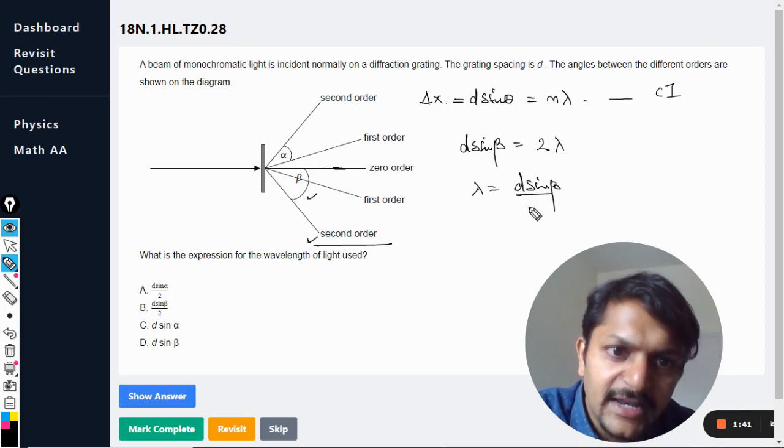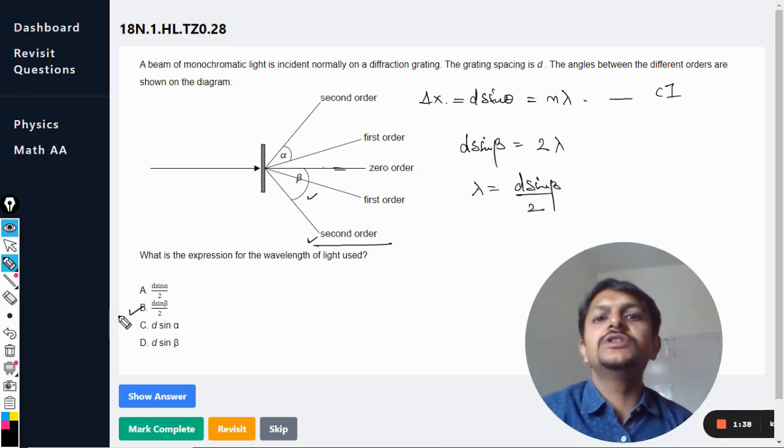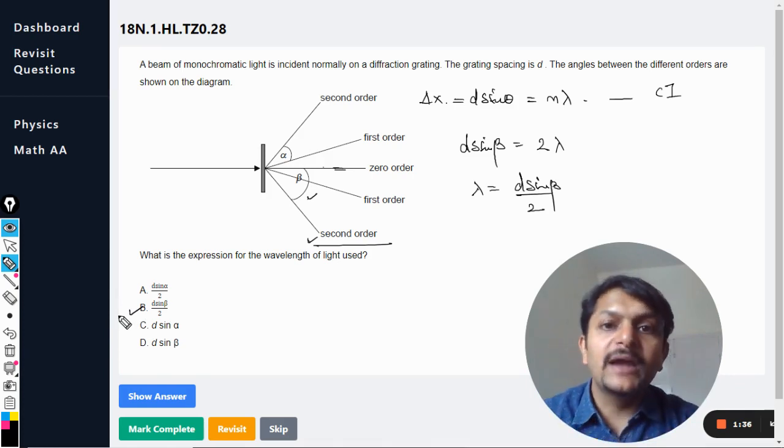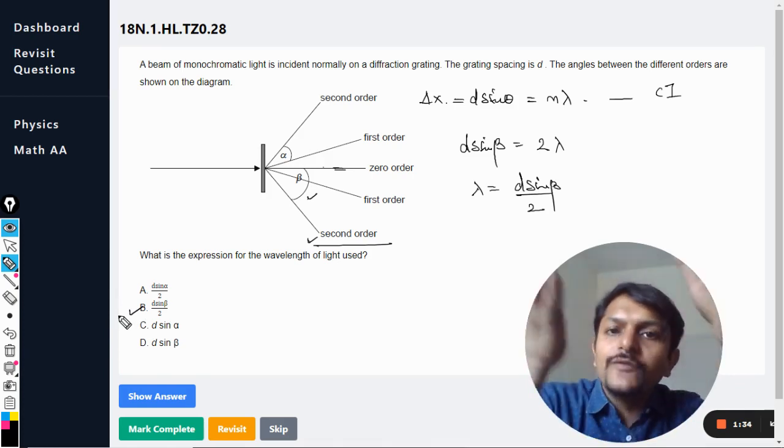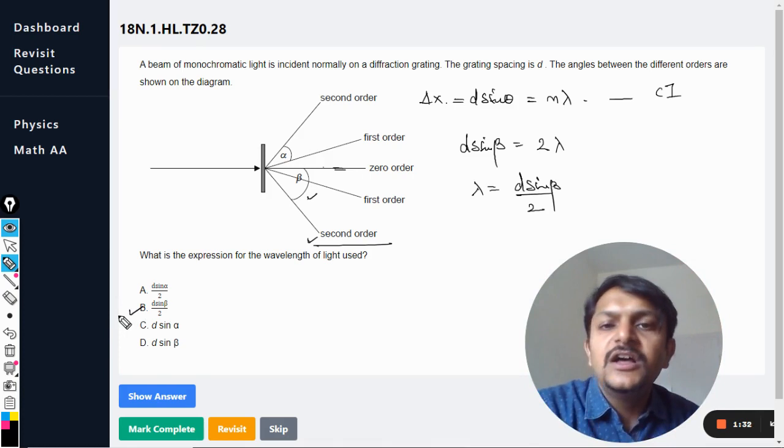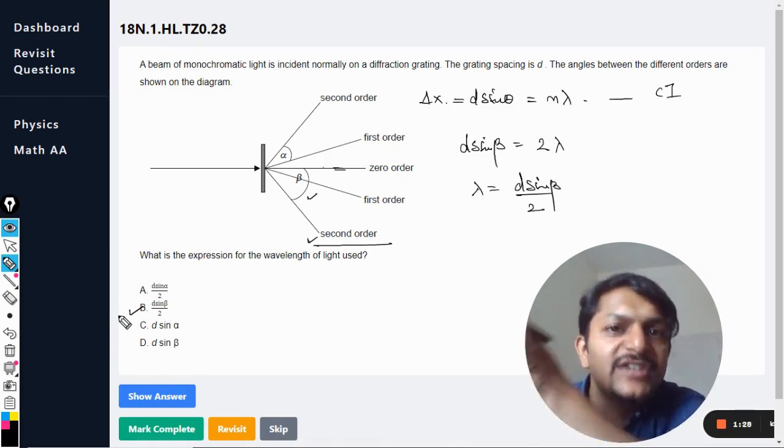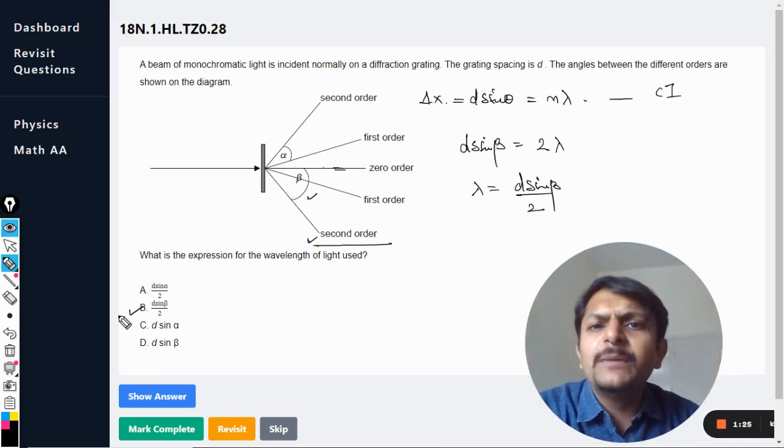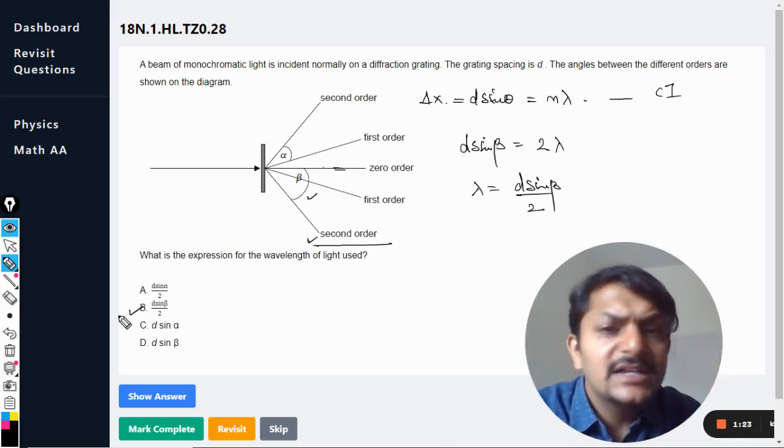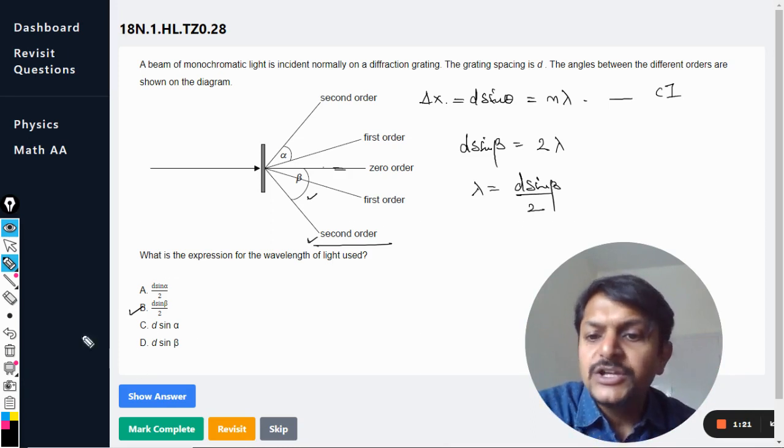And so the answer will be B. So my students, don't get confused in all of those cases that I have given here, like diffraction grating, multiple slits, and then two slits, and then single slit. Don't get confused there. All of them are majorly same, same formulas are applicable.